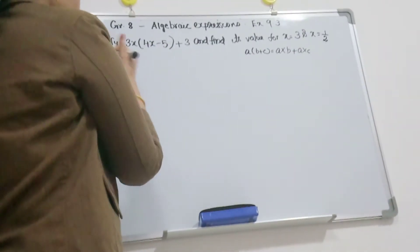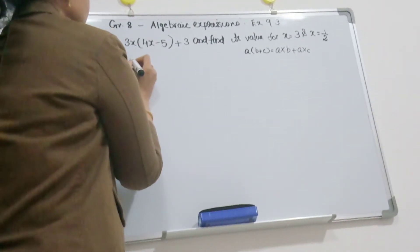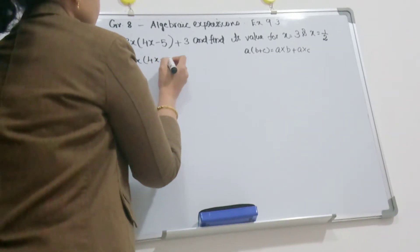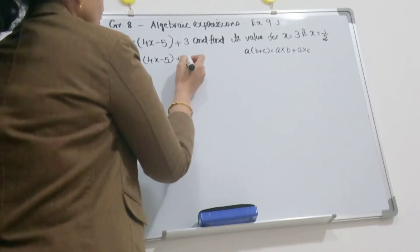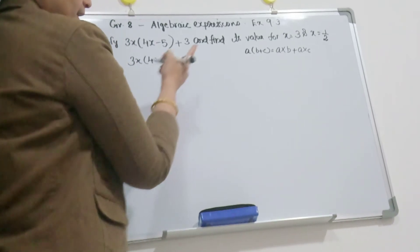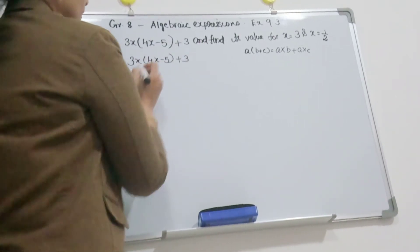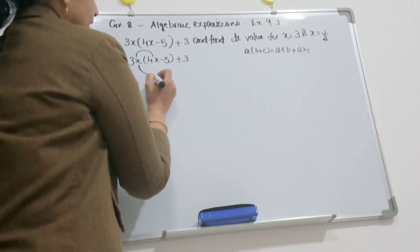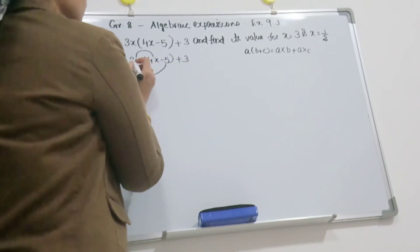Using this property, you simplify 3x into 4x minus 5 plus 3. You remove the bracket by using the distributive property. You multiply this by the first term and multiply by the second term. So this becomes 3 into 4, 12x into x, x square. So this is 12x square.